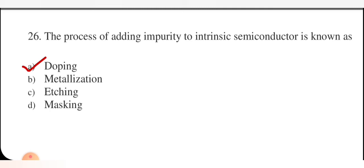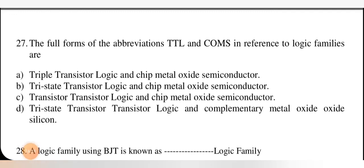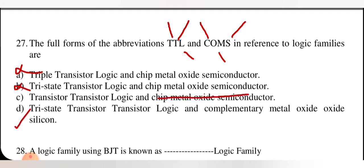What is the full form of TTL and CMOS in reference to logic families? Triple transistor logic and tri-state transistor logic are both wrong because each T stands for transistor and L stands for logic. C stands for complementary, M for metal, O for oxide, S for semiconductor. The correct option is D: transistor-transistor logic and complementary metal oxide semiconductor.